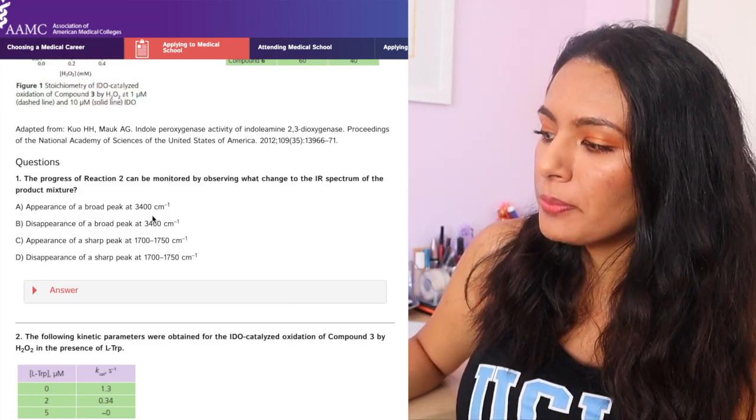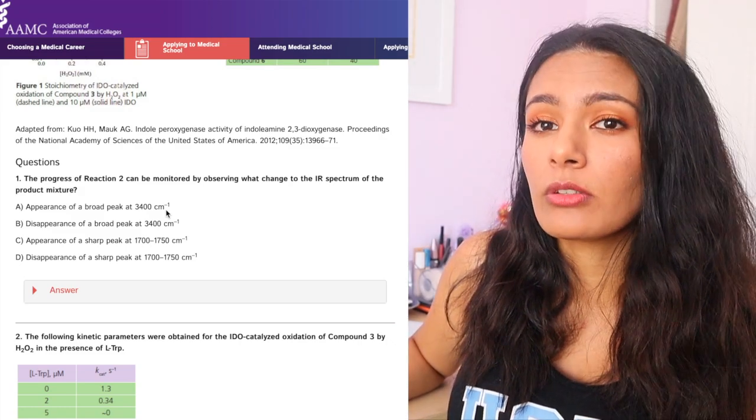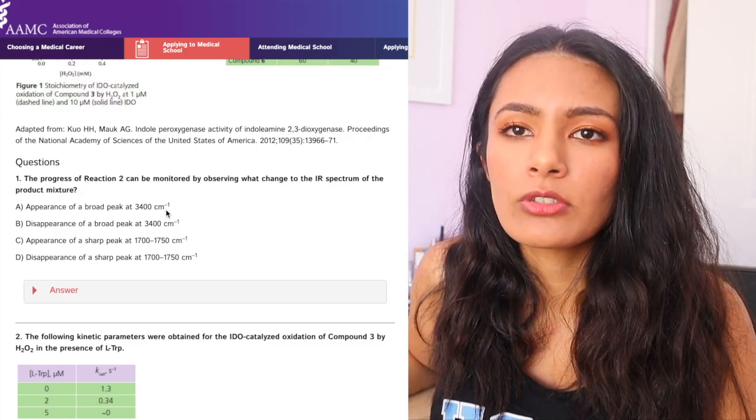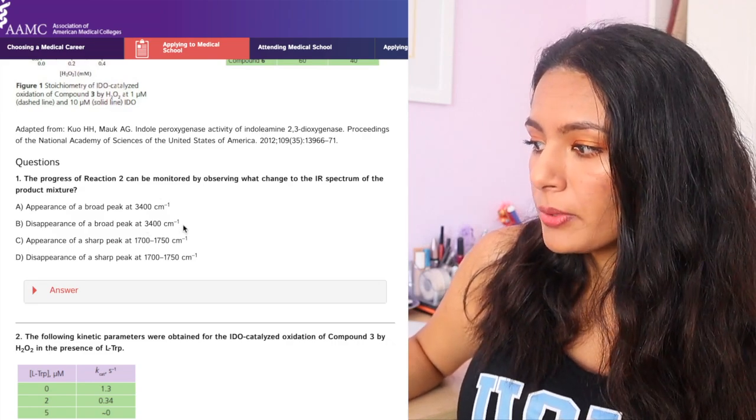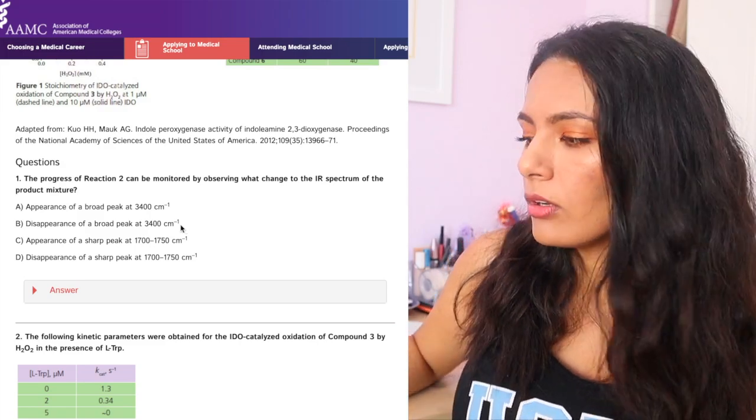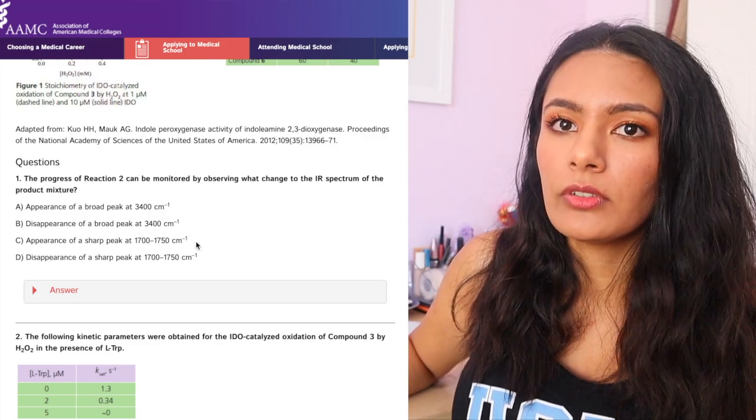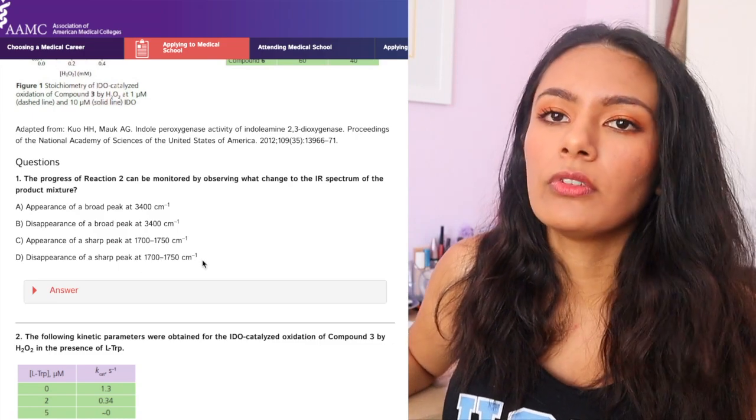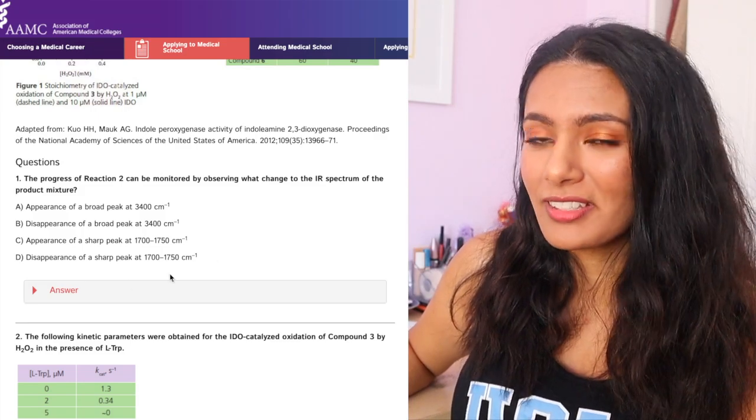So let's see if the answer choices have anything like that. So A says appearance of a broad peak at 3400. So to my memory, carbonyl peaks are really sharp, they're not really broad. You'll see more broad peaks in the alcohol OH groups if anything. So I'm not going to say A. Disappearance of a broad peak at 3400. I'm pretty sure carbonyls will make a sharp peak appear. So we're going to cancel out B. Appearance of a sharp peak at about 1700 to 1750. That's in line with what we were saying. And the disappearance of a sharp peak at 1700 to 750. So D also sounds like it's not the right answer. So I'm going to say C. Hopefully it's the right answer.